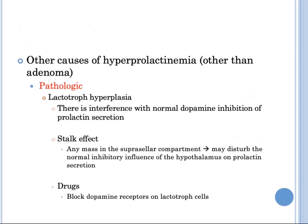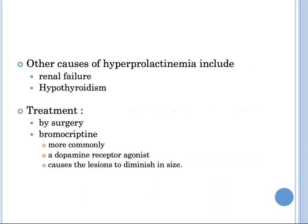Pathologic hyperprolactinemia may result from lactotrope hyperplasia due to interference or loss of dopamine-mediated inhibition of prolactin secretion. This interference may occur when there is damage to the dopaminergic neurons of the hypothalamus or pituitary stalk — such as secondary to head trauma — disturbing the inhibitory influence of the hypothalamus on prolactin secretion. Drugs that block dopamine receptors on lactotrope cells, as well as renal failure and hypothyroidism, can also cause hyperprolactinemia. Lactotrope adenomas are treated by surgery or more commonly with bromocriptine, a dopamine receptor agonist that causes the lesion to diminish in size.